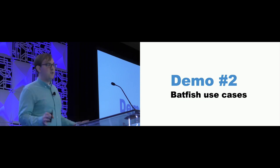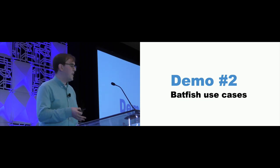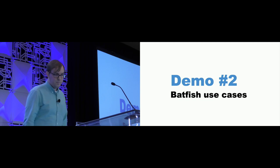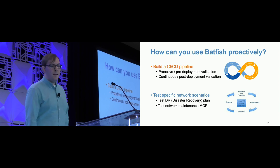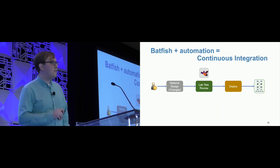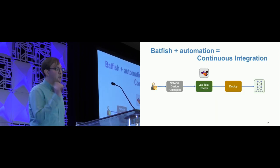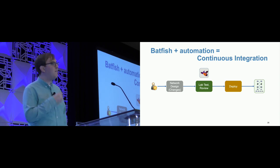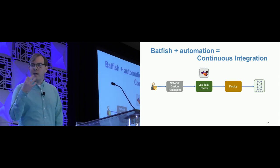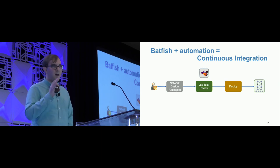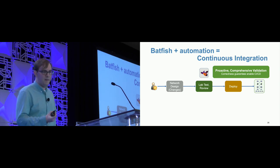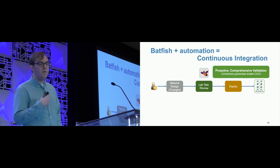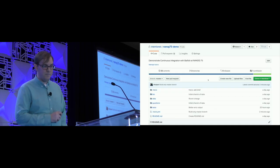I've given you an overview of those four Batfish capabilities. Now let's talk about how they can be put to use in a CI/CD pipeline. How can we actually test network changes before we deploy them? We talk to our peers about what we're going to do, we log into devices, change configs, maybe emulate things, then deploy. When we use Batfish, we can do all of this ahead of time, and we can be proactive and comprehensive.